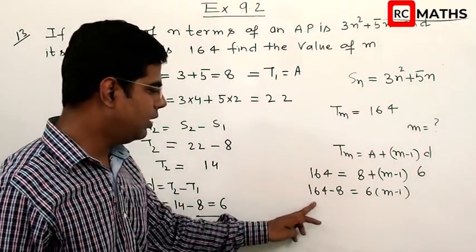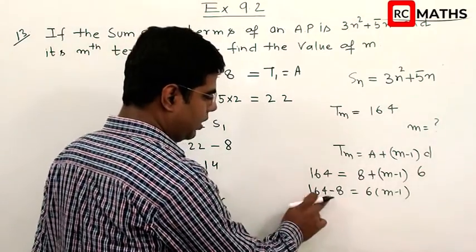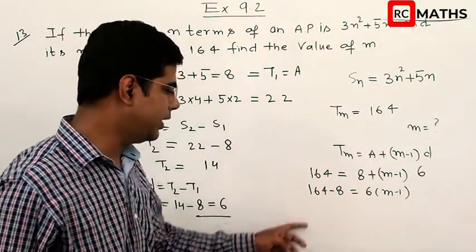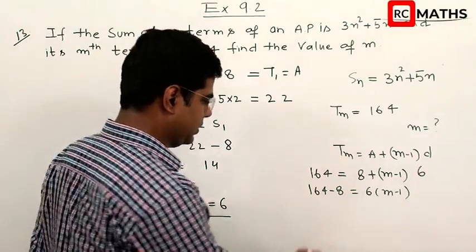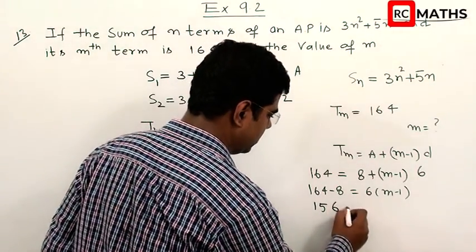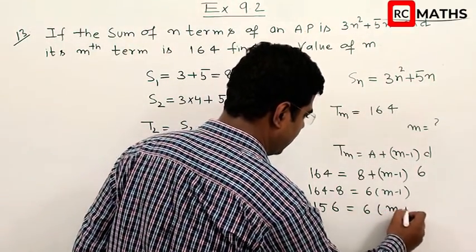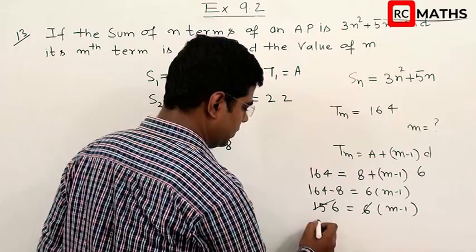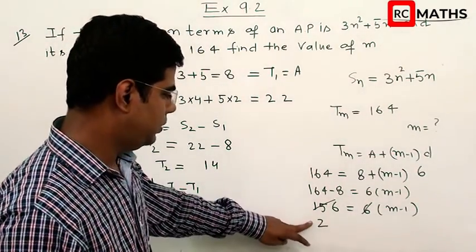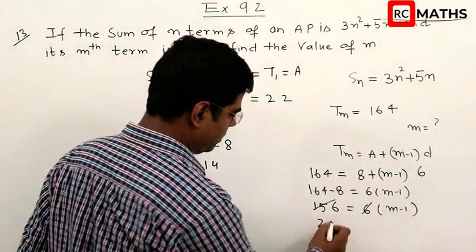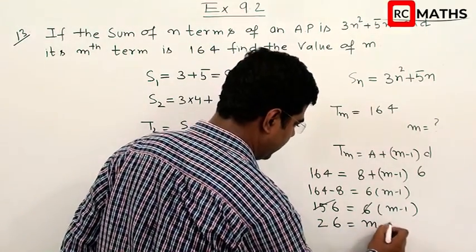164 equals 8 plus 6 times m minus 1. So 156 equals 6 times m minus 1, which gives 26 equals m minus 1.